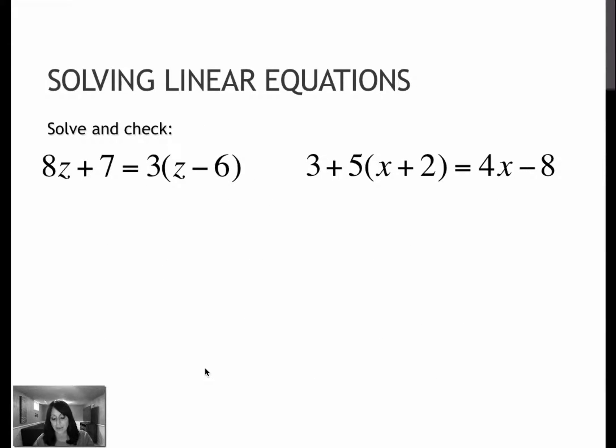Let's do some practice together. For our first question, remember, not a bad idea to draw your wall. On the left side, nothing I can do to simplify. I just have 8z plus 7. On the right side, I need to clear the parentheses. 3 times z is 3z, and 3 times minus 6 is minus 18. If I wanted to keep flip change, of course, I could have that as plus negative 18. Whichever one is better for you is the way you should write it.